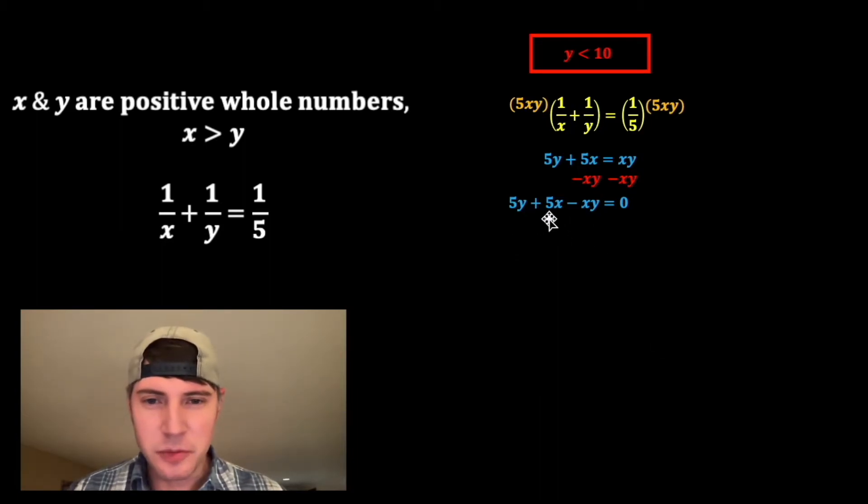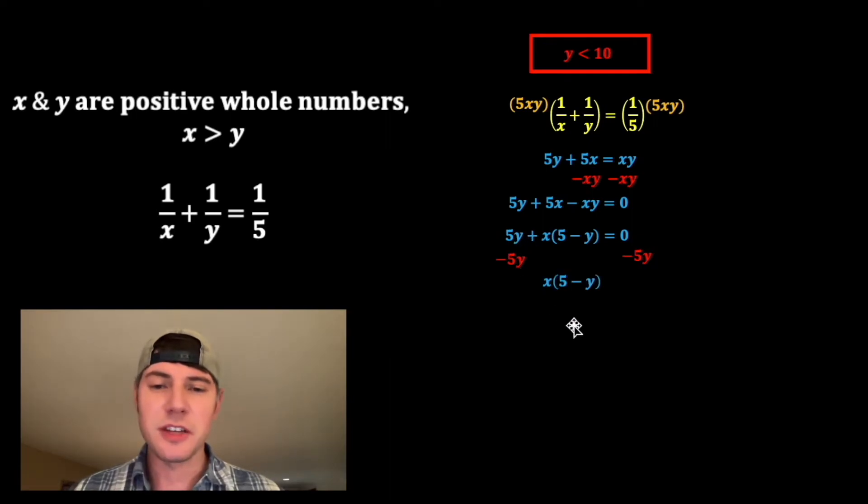From here, I have two terms that contain an x. I'm gonna factor that x out. So x times what is 5x? Well, that's 5. And then x times what is negative xy? That's negative y. If I were to distribute this x to both the terms, it would bring me back to here. And now let's bring down everything else. I want to get this x alone, so I'm gonna subtract 5y from both sides. These two will cancel, so the left side just has this. And on the right-hand side, we have a negative 5y.